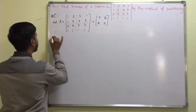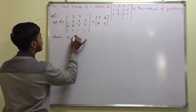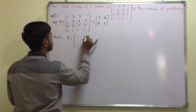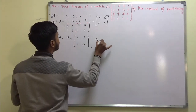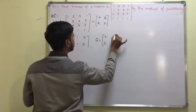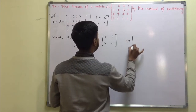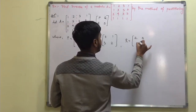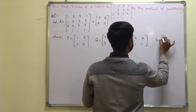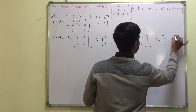Here you can write where P is equal to 1, 1, 2, 3. What is Q? Q is equal to 3, 3, 1, 2. What is R? R is equal to 2, 4, 1, 1. And what is S? S is equal to 3, 3, 1, 1.